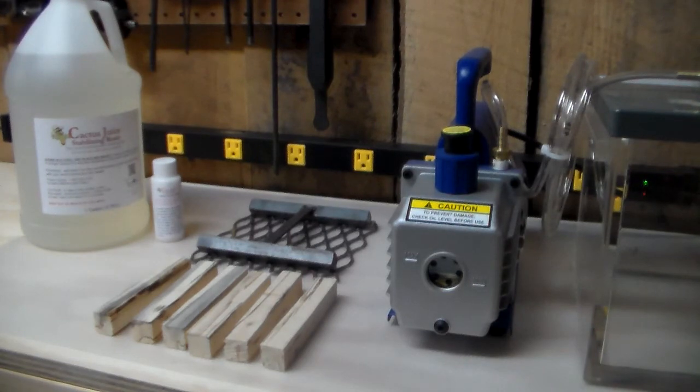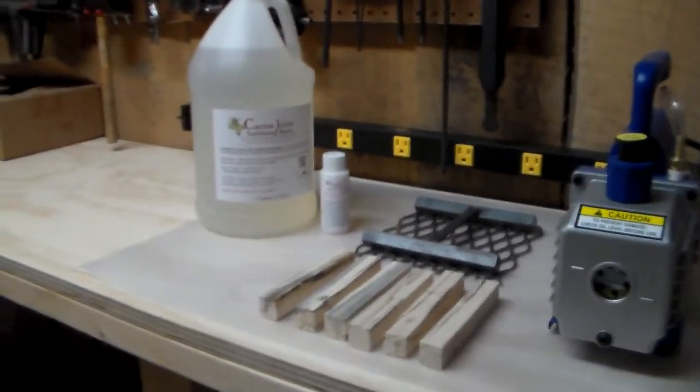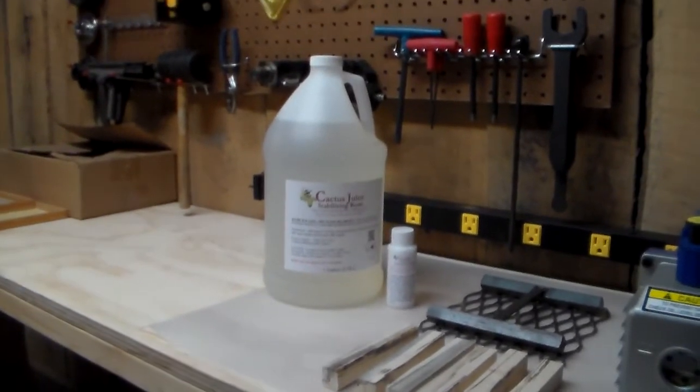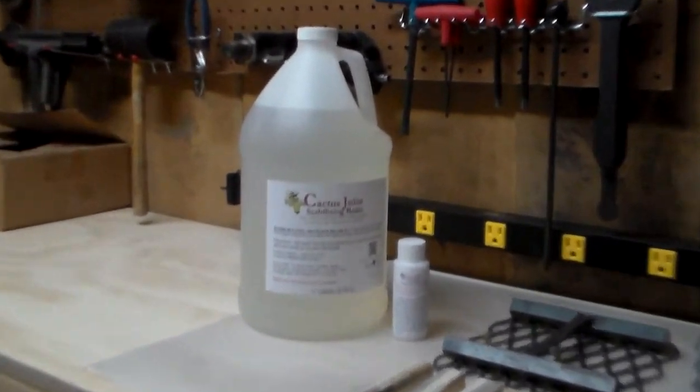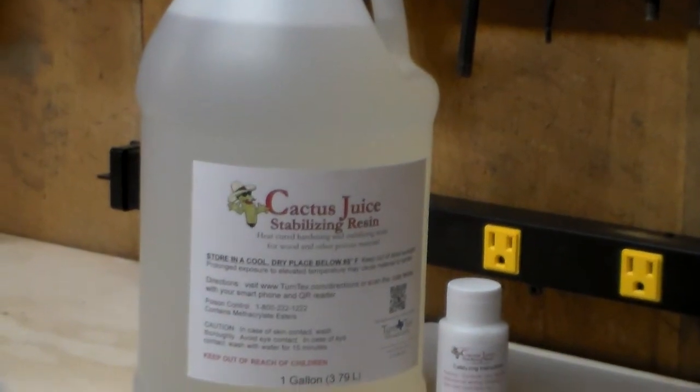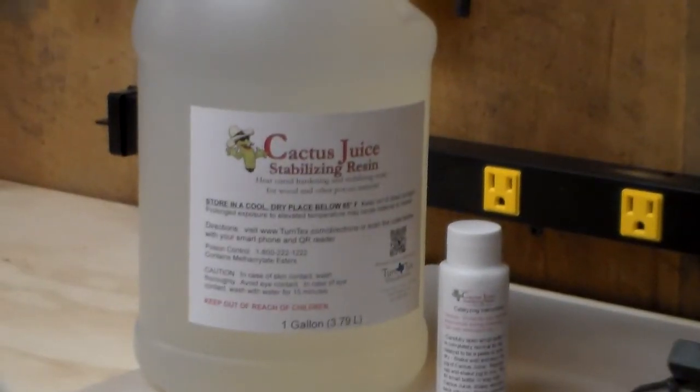And here is a gallon of the cactus juice stabilizing resin. It comes with the catalyst. Shelf life is about six months, somewhere around through there as long as you keep it at a cool temperature without the catalyst in it. And after you add the catalyst, it has to be kept very cool in a cool place all the time.